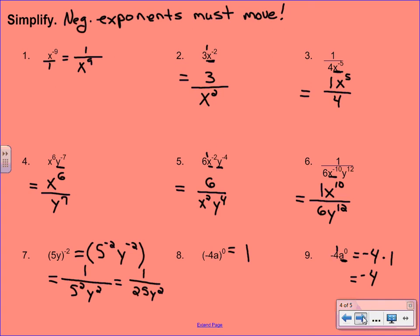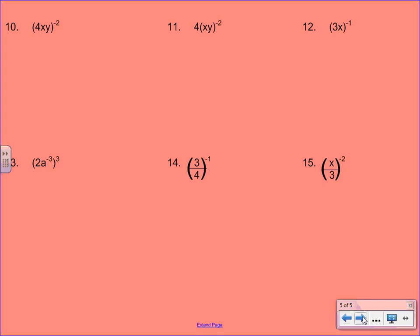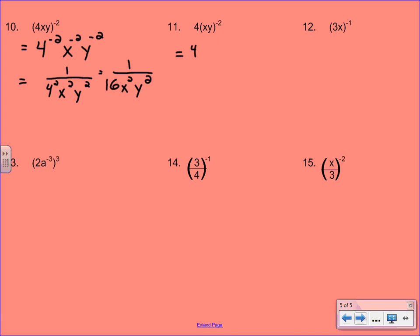Hang in there — we have a lot of examples. Number 10: we are going to take this exponent and distribute it to every single base. We start by writing 4 to the negative 2nd, x to the negative 2nd, y to the negative 2nd. Now I've got a lot of unhappy exponents here — they're all going to have to go to the denominator. So put that 1 in the numerator to hold the spot and shift everything else to the denominator. The only thing left to do is to simplify 4 to the 2nd. Number 11 again looks very similar to number 10, but the difference is now the 4 is left out. So the 4 is just going to hang out waiting for the rest of the problem. We're going to distribute that negative 2 to both the x and the y. The 4 has a positive exponent so that's going to stay in the numerator, and then we're going to send the x and the y down to the denominator.